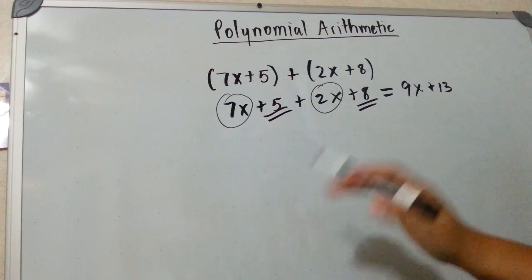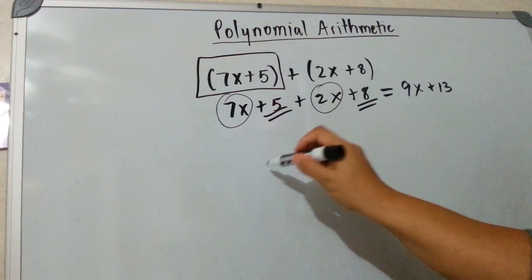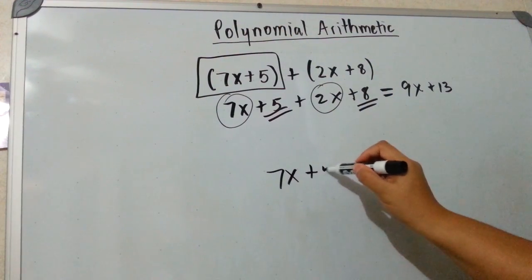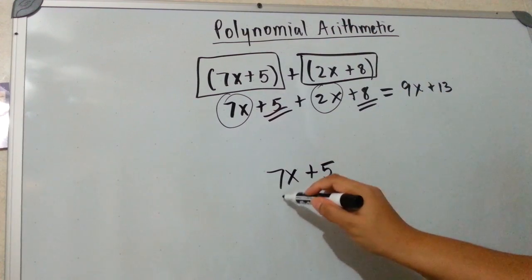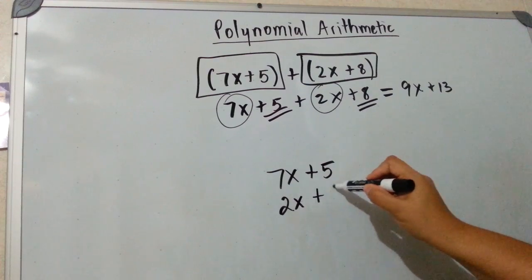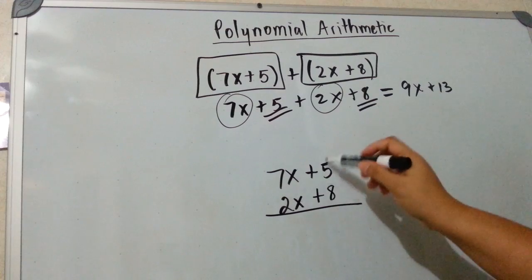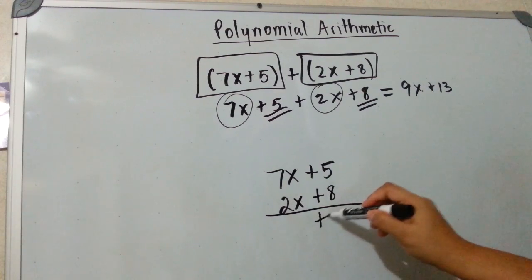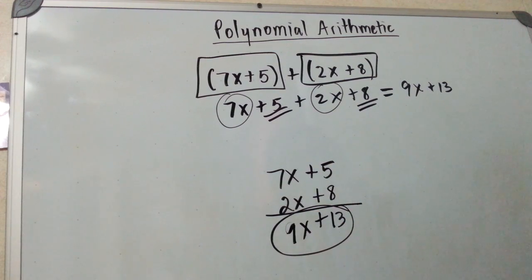Another way of doing this is to do it vertically. So you would write the first polynomial, and you would write the second polynomial, and you would add it. But you would put the terms underneath like terms. And you just add the same way we would add top to bottom. So this is a positive 13, and this is a 9x. That would be the answer.